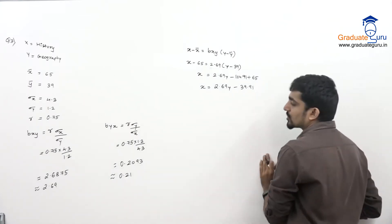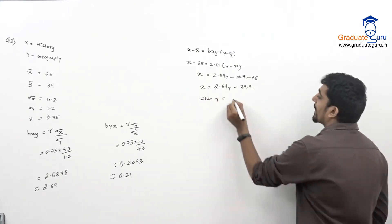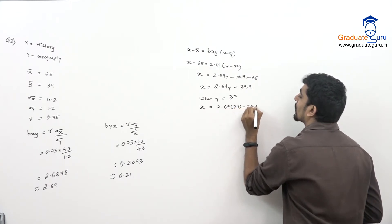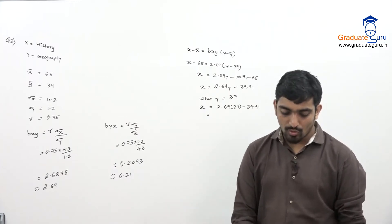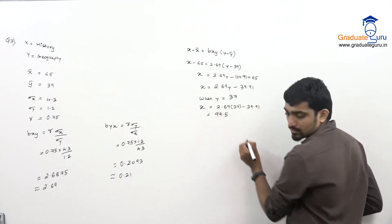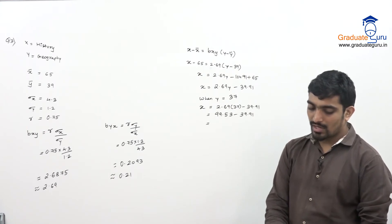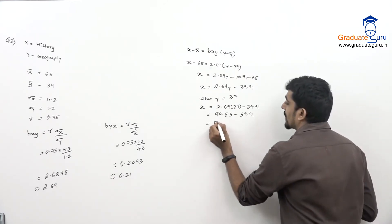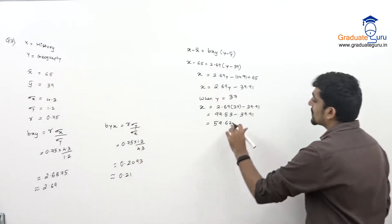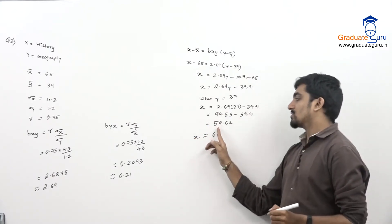Now since this condition is obtained, we are asked: when y = 37 (student got 37 marks in geography), find x. So x = 2.69 × 37 − 39.91. Computing: 2.69 × 37 = 99.53, then 99.53 − 39.91 = 59.62. Since marks are given as integers, rounding to the nearest integer gives approximately 60 marks in history.